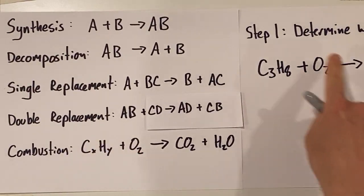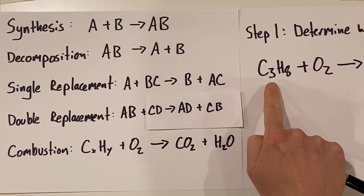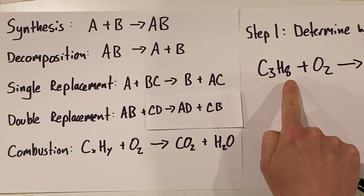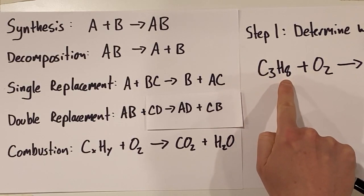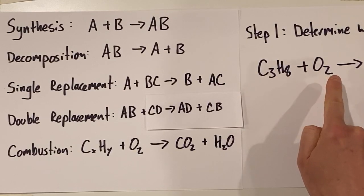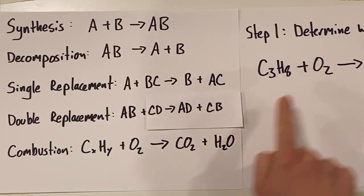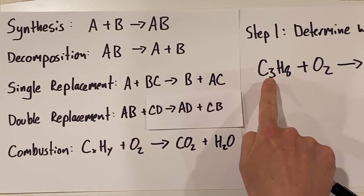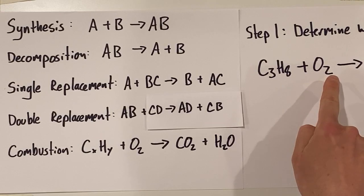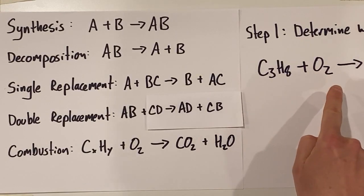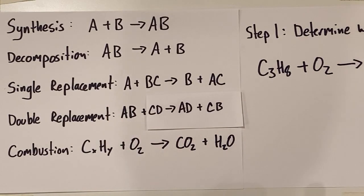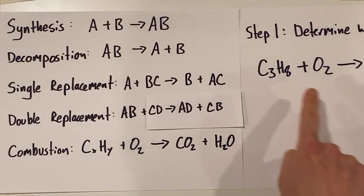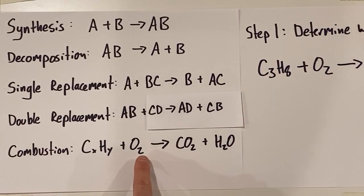The key thing with this reaction here is to realize that C3H8 is a hydrocarbon. It's got some number of carbons and then some number of hydrogens bonded together. So, we've got a hydrocarbon plus O2, plus oxygen. This is going to be a combustion reaction. Lots of folks, when they see this, say they've got an A and a B plus another substance and want to make this into a single replacement reaction. But actually, you've got to look out for the hydrocarbon plus oxygen — that's a combustion reaction.